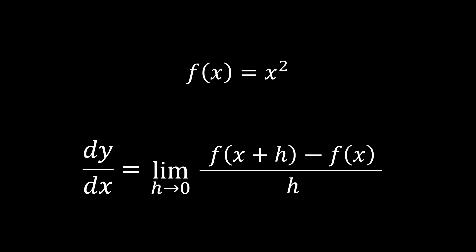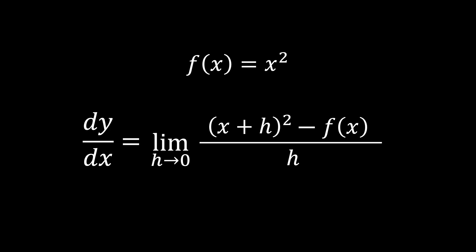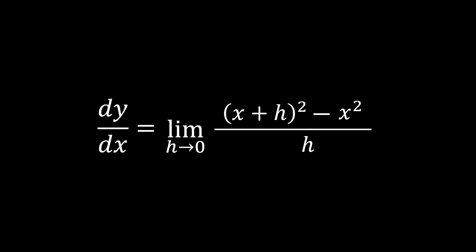For example, let's differentiate f of x equals x squared from first principles. Start with the formula. Substitute f of x plus h as x plus h squared. For f of x equals x squared, the formula becomes x plus h squared minus x squared, all divided by h.